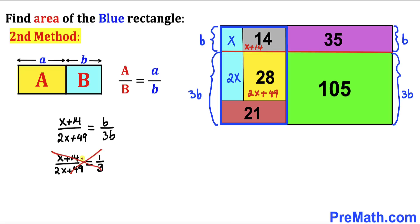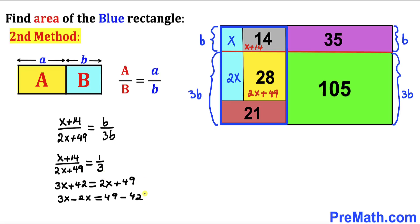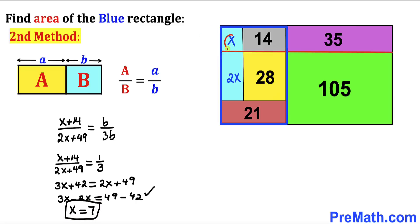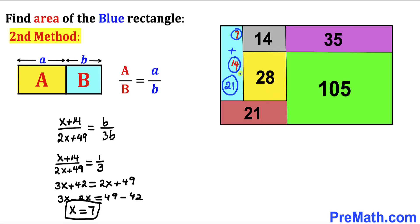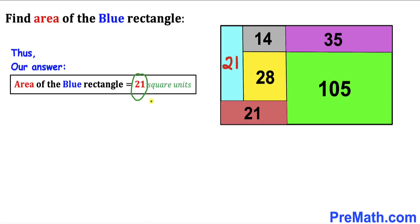Cross-multiplying: 3(X + 14) equals 2X + 49, giving 3X + 42 equals 2X + 49. Moving 42 to the right and 2X to the left: X equals 7. So X equals 7 and 2X equals 14. The total area is 7 plus 14, which is 21 square units. Thus the area of this blue rectangle turns out to be 21 square units.